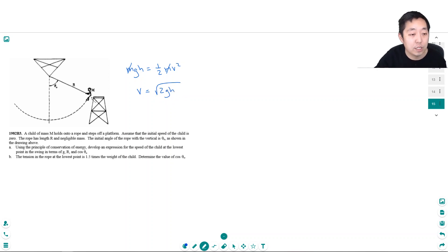I need to figure out what h is. h is this distance. It's the vertical distance from the lowest point up to here. And we have to figure out that distance.